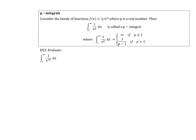A special type called a p-integral has the form 1 over x to the power of p. If p is less than or equal to 1, this integral equals infinity, so it diverges. If p is strictly greater than 1, the value of the integral is 1 over p minus 1, and the integral converges.